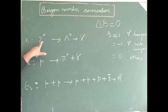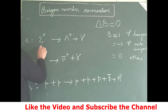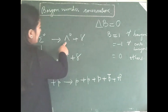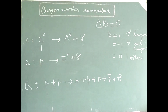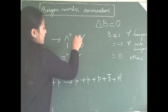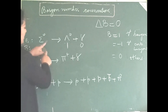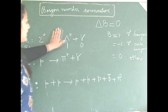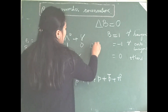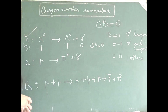Let us look into the first example. Sigma 0 is a baryon, so baryon number is 1. Delta 0 is also a baryon, baryon number is 1. The photon is not a baryon — it is an exchange particle — so baryon number is 0. On the left-hand side it is 1, and on the right-hand side it is 1. So delta B is 0, and baryon number is conserved here.